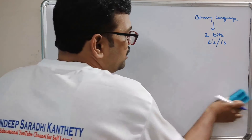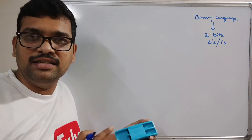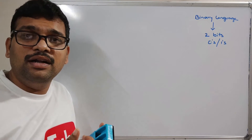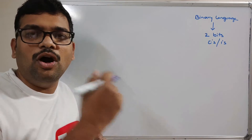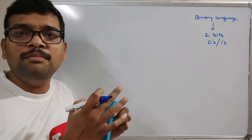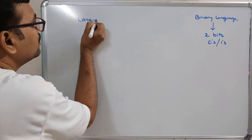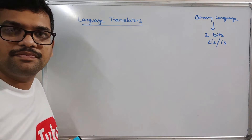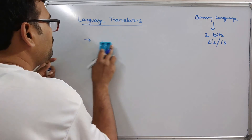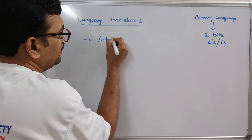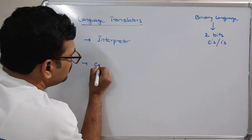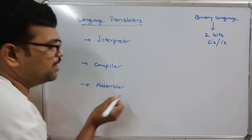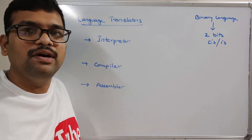We write instructions using assembly language or high level language, and the next step is to convert this source code to machine code, which is the object code. For this translation there will be language translators. The translators are of three types: one is interpreter, another one is compiler, and another one is assembler.